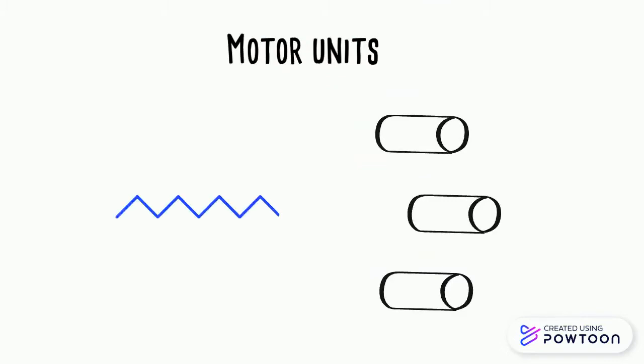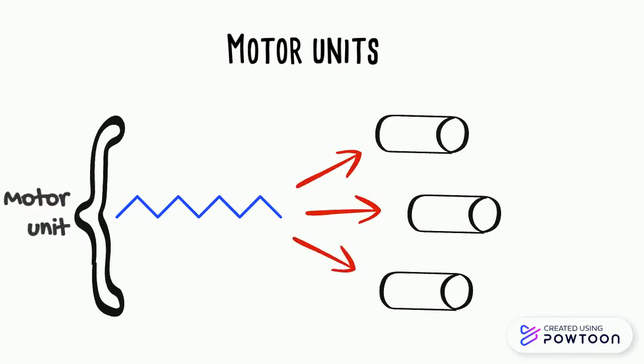This is a good analogy for understanding motor units. If these are our muscle fibers, then each fiber is innervated by only a single motor neuron, but one motor neuron can innervate many fibers. The motor unit consists of the motor neuron along with all the fibers it innervates.